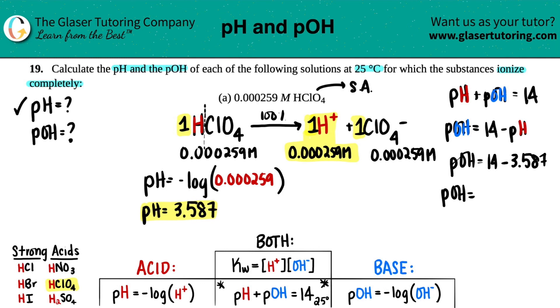Okay. Calc these out again. 14 minus 3.587. And I get 10.413. And that is my two answers, my pH and my pOH. And we're done with this problem.